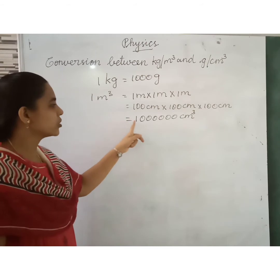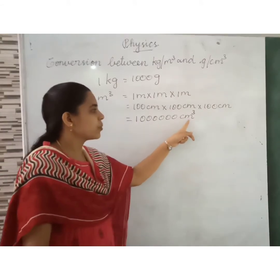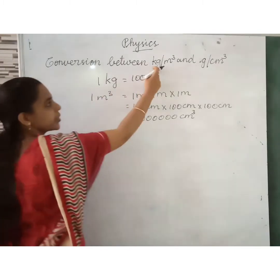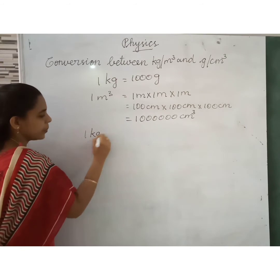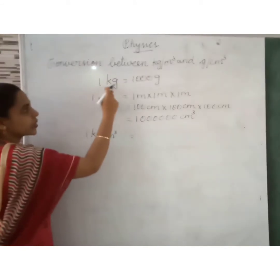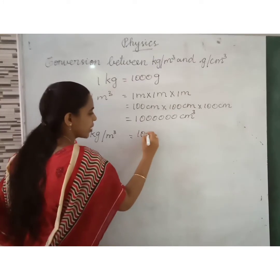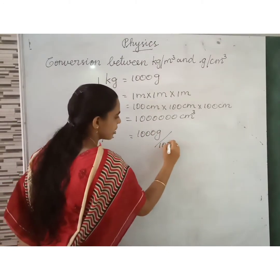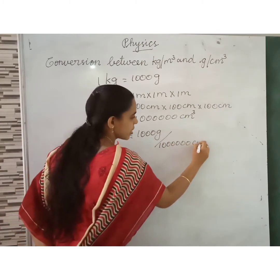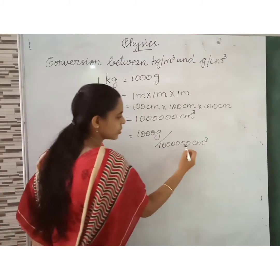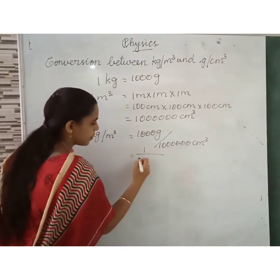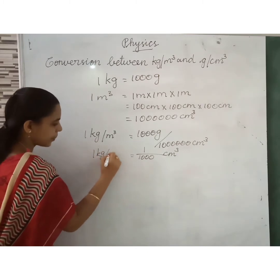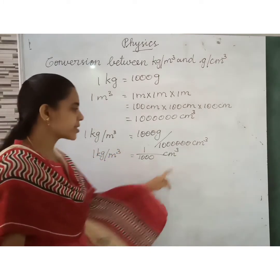One meter cube is equal to 1,000,000 centimeter cube. So, one kilogram per meter cube equals 1000 grams divided by 1,000,000 centimeter cube, which gives one by one thousand gram per centimeter cube. Therefore, one kilogram per meter cube is equal to one-thousandth gram per centimeter cube.